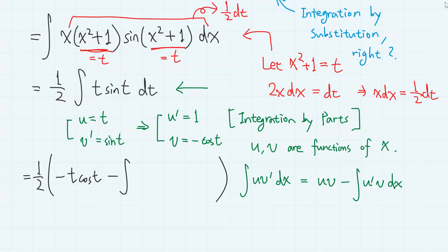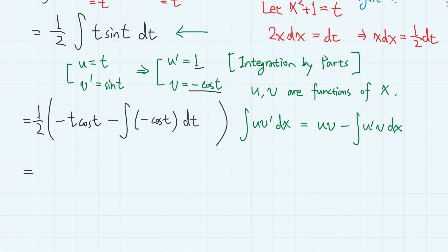minus integral u prime v, so 1 times minus cosine t, so minus cosine t dt, which gives minus 1 half t cosine t, then plus 1 half of the integral of cosine t, so plus 1 half sine t, then constant c.